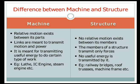Links in a machine transmit motion and power. In the case of a structure, the members only transmit forces — they do not transmit any power. They transmit forces from top to bottom, or to the ground.